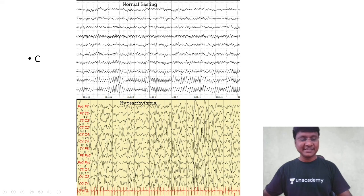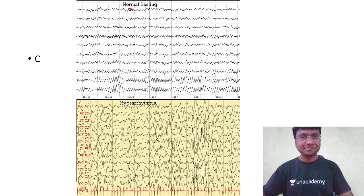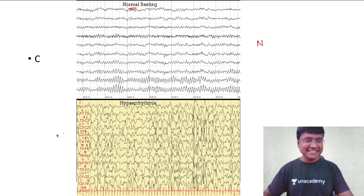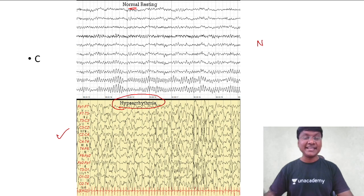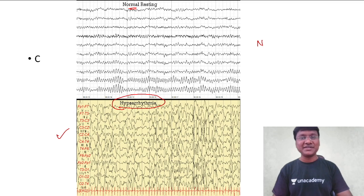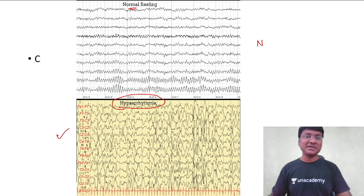This is the image of the hypsarrhythmia. This is your normal resting EEG, and this is the EEG of hypsarrhythmia, which contains the chaotic pattern. That is the EEG related to infantile spasms. Now the very important question is: what is the drug of choice in infantile spasms?